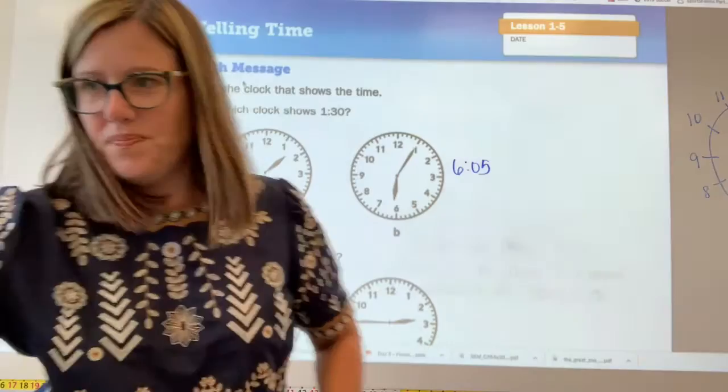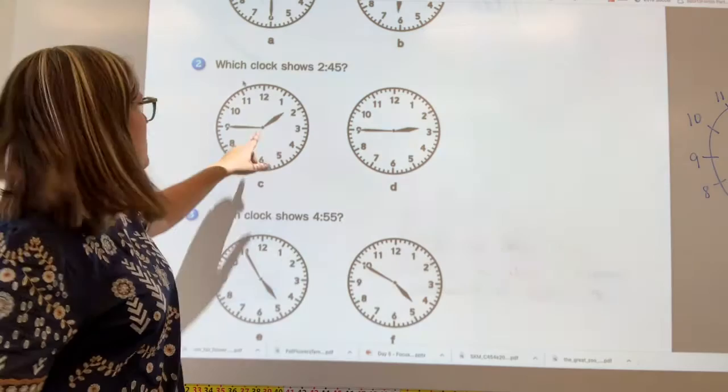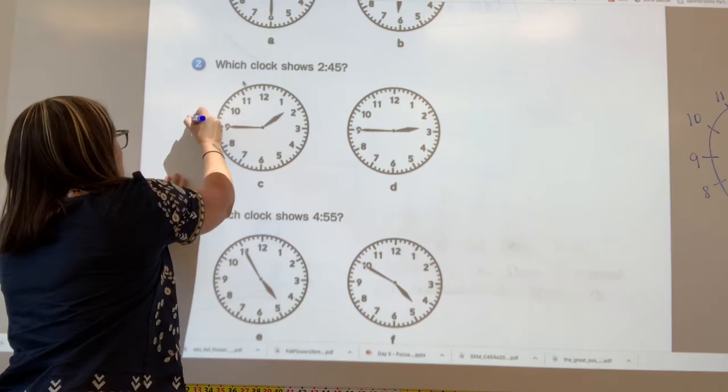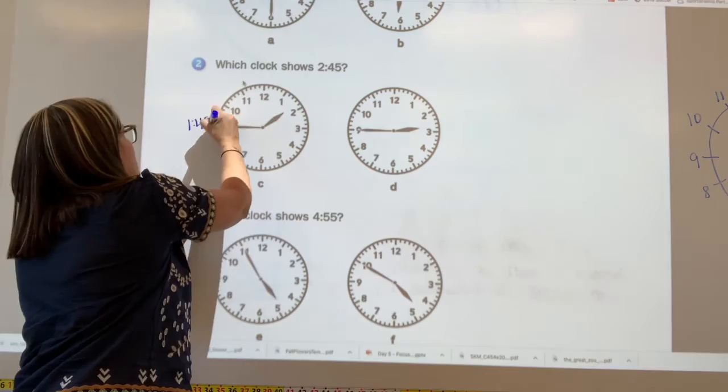Let's scroll down and do number two. So let's write down the times of the clocks we see. So this one is between the one and the two. So that means it's one. And then let's count our minutes. So five, 10, 15, 20, 25, 30, 35, 40, 45. I think that clock shows 145.